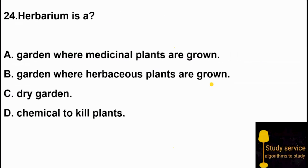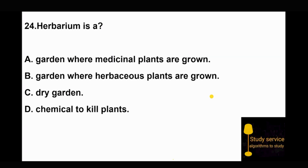Question 24: Herbarium is — Option A: a garden where medicinal plants are grown. Option B: a garden where herbaceous plants are grown. Option C: a dry garden. Option D: a chemical to kill plants. A herbarium is a collection of dried plant specimens kept in herbarium sheets with complete classification details — when the plant was collected and other information — so it can be preserved for study and identification. Option C, dry garden, is the right answer.